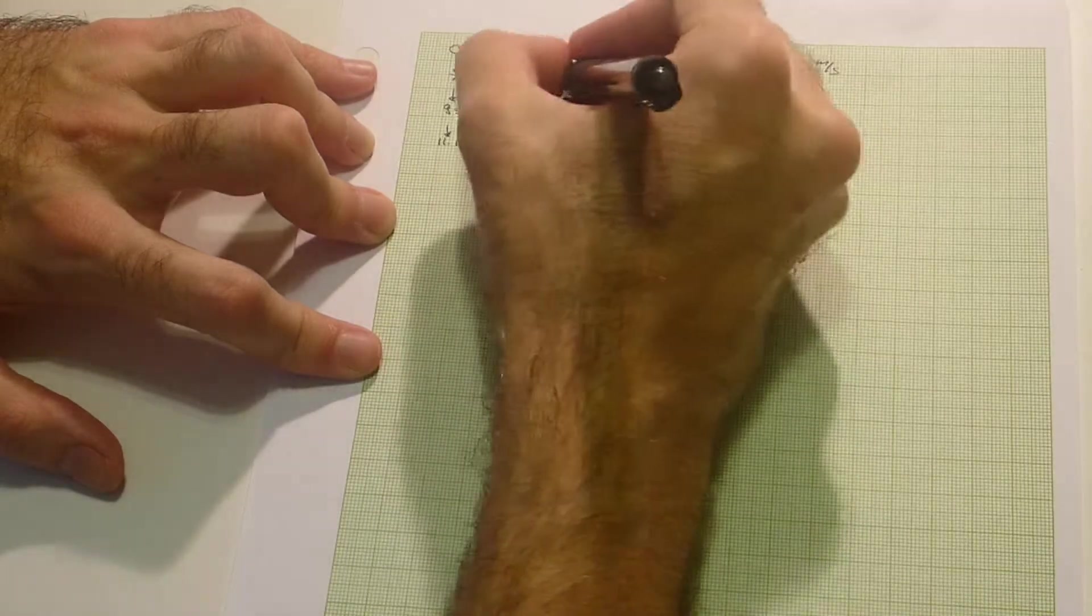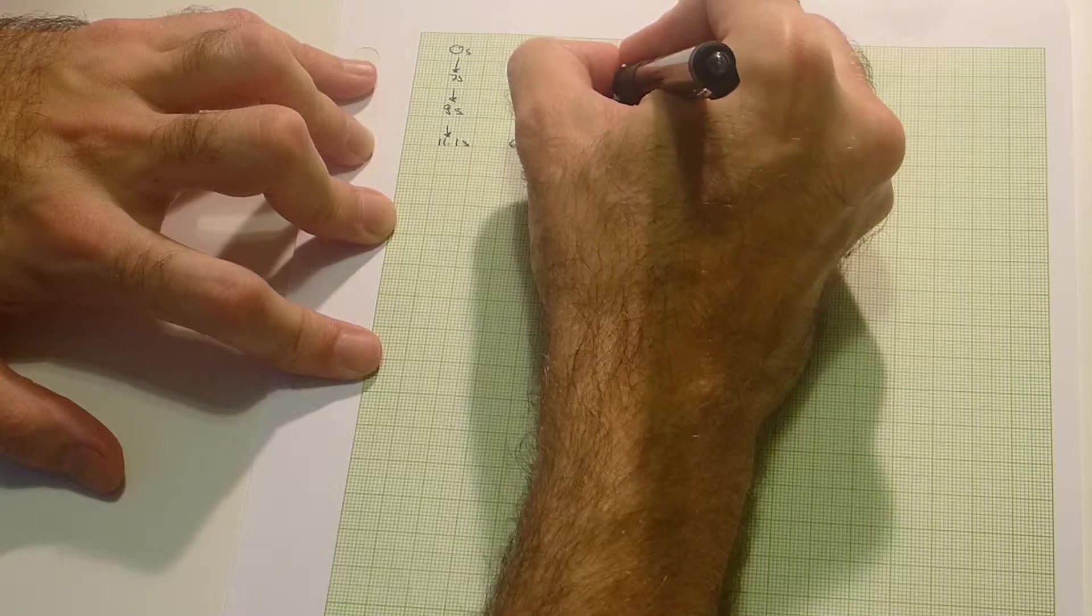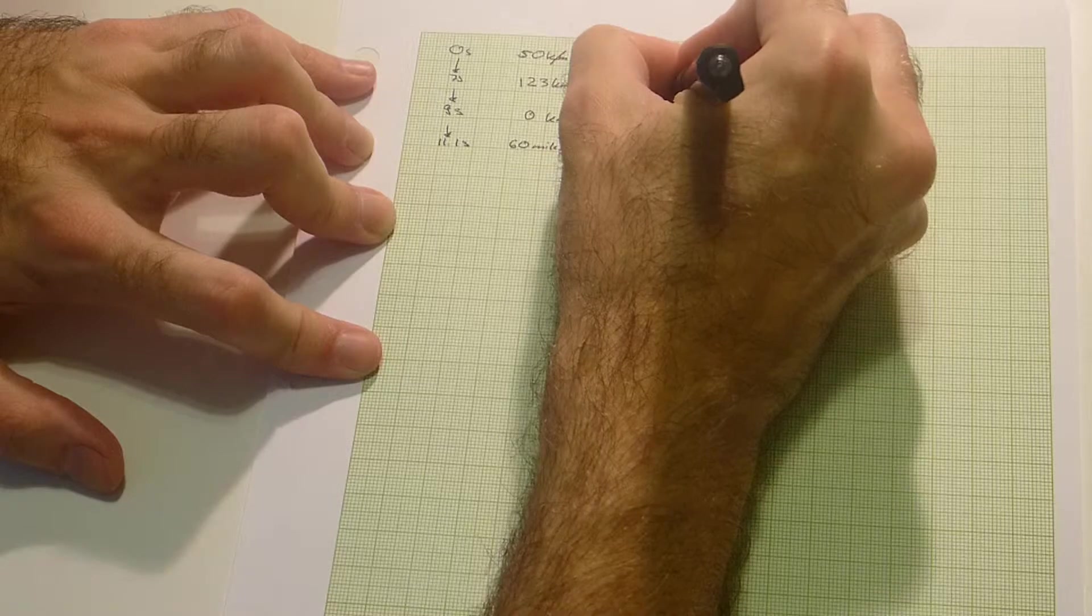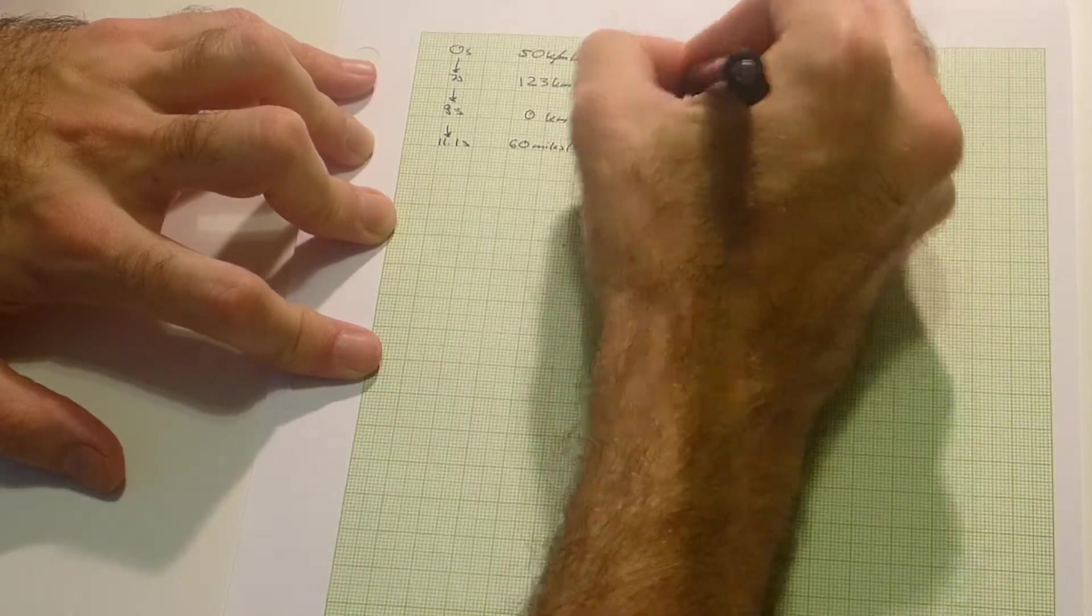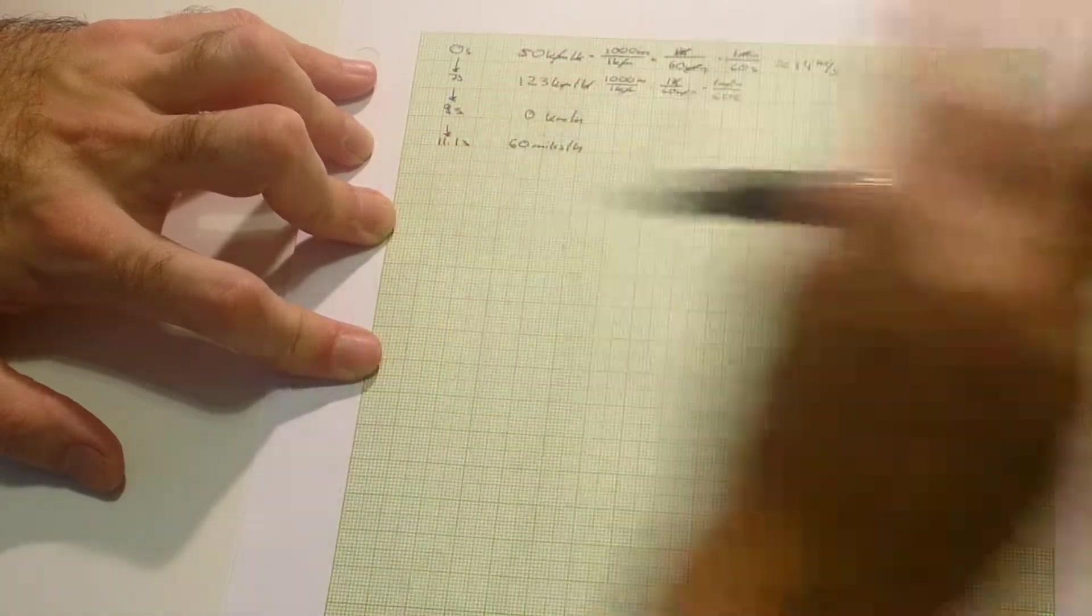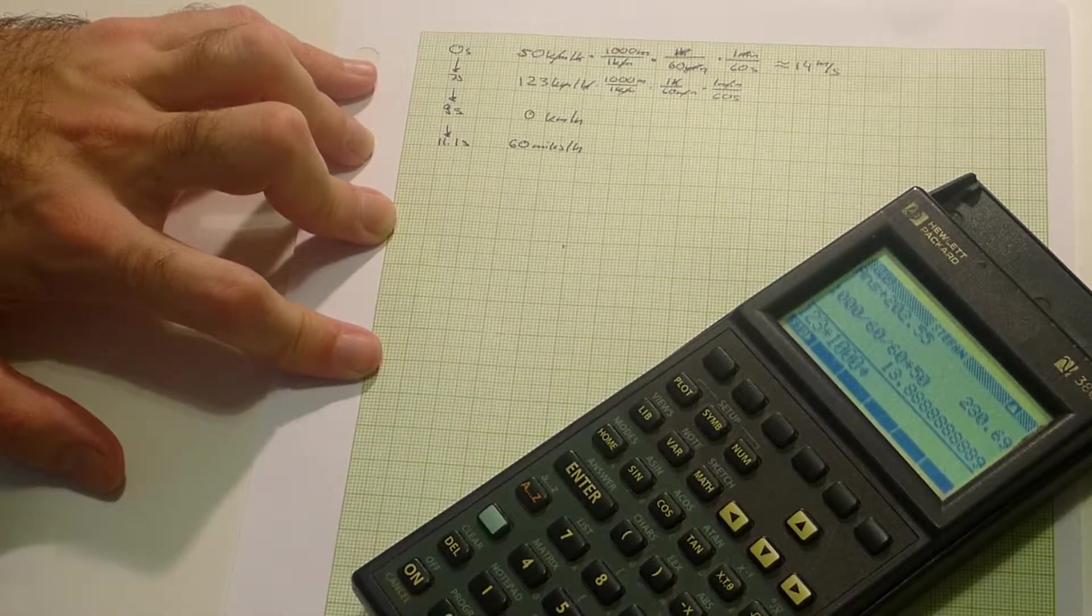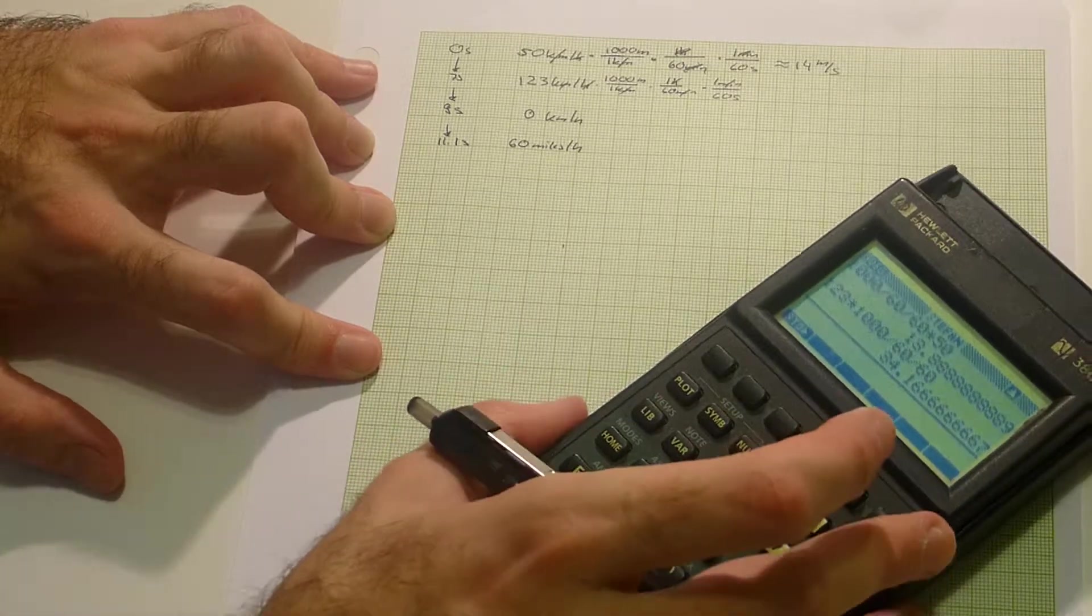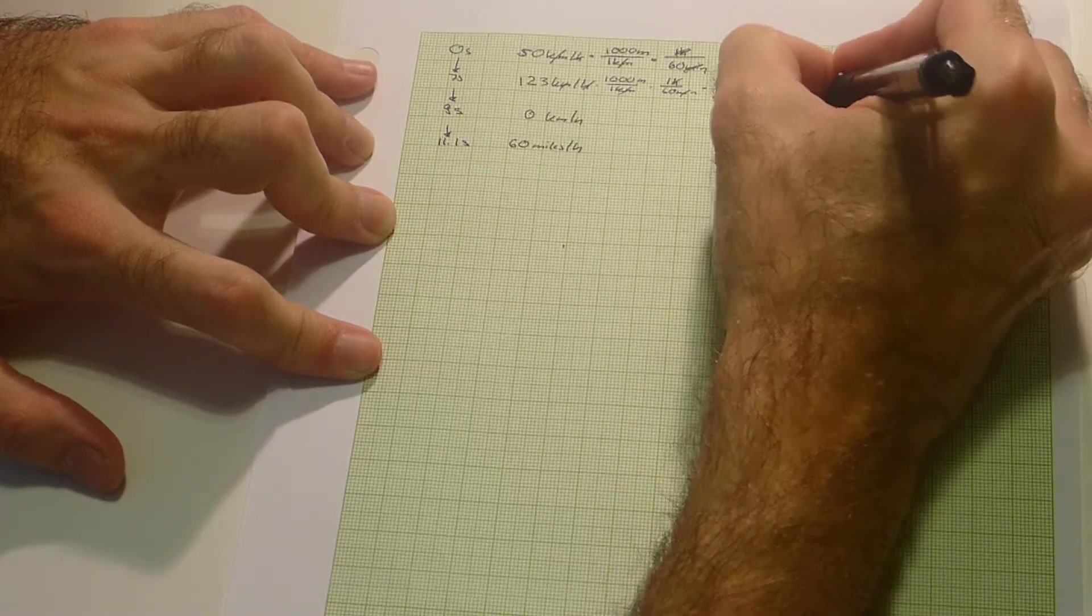The same with 123 times 1000 meters for 1 km, times 1 hour for 60 minutes, times 1 minute for 60 seconds. Hours go away, minutes go away. What remains is meters per second. 123 times 1000 divided by 60 divided by 60 gives us around 34 meters per second.